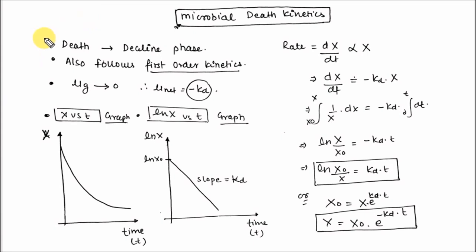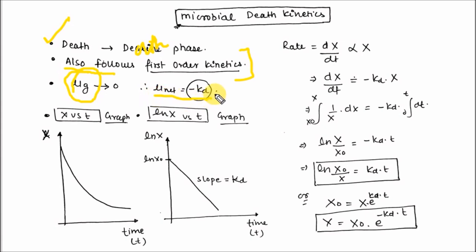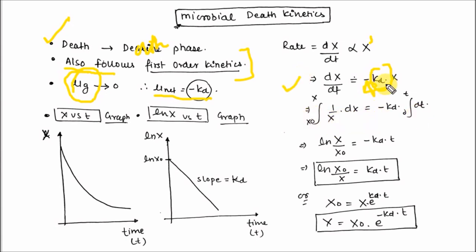Let's see the microbial death kinetics. Death occurs in the decline or death phase. It also follows first-order kinetics — the rate is dependent upon x. Mu_g is 0 in the death phase, so mu_net equals minus kd. The rate is directly proportional to x to the power 1. Eliminate the proportionality constant by minus kd, the death rate constant. The minus sign denotes that the number of cells is decreasing with increase in time. Integrating gives: ln(x/x₀) = -kd·t.